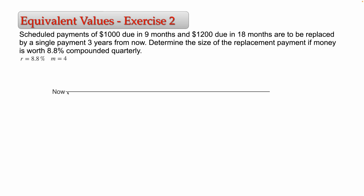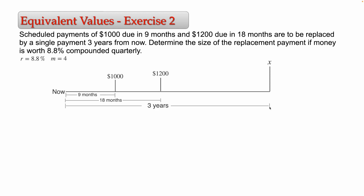Now I can start reading and try to understand the problem. There is a scheduled payment of $1,000 due in nine months, so I'm going to place $1,000 at nine months on the timeline. There is another scheduled payment of $1,200 due in 18 months. Finally, these two payments need to be replaced by a single payment three years from now — and that is the payment we need to find.